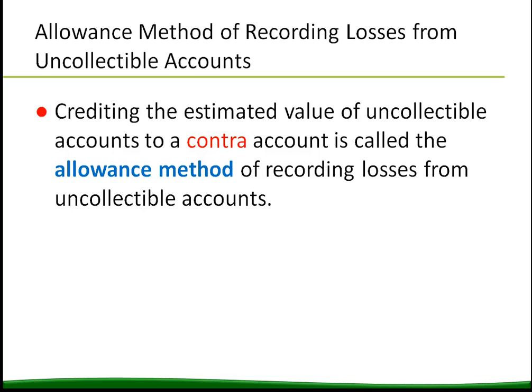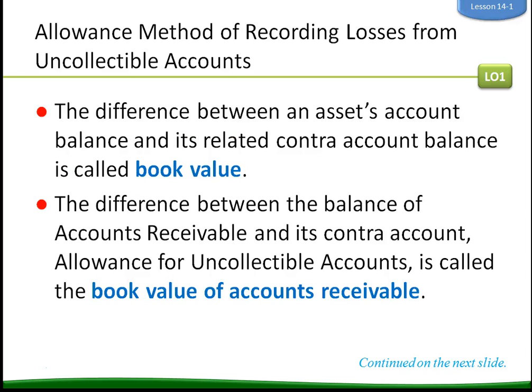The difference between an asset account balance and its related contra account balance is called book value. The difference between the balance of accounts receivable and its contra account — which is the allowance for uncollectible accounts — is called the book value of accounts receivable. The book value of accounts receivable reported on the balance sheet represents an estimate of the total amount of accounts receivable the business expects to collect in the future.